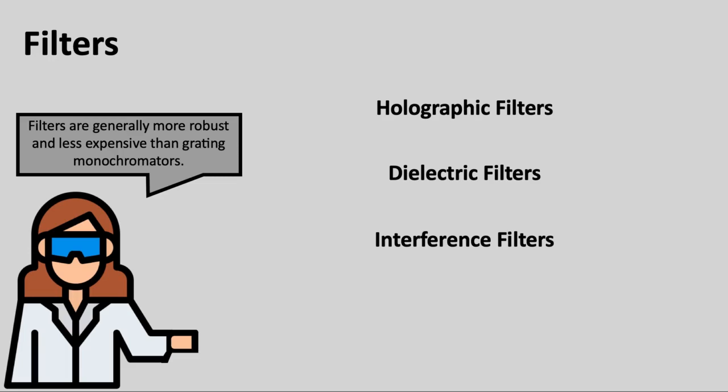But in all cases, filters basically permit certain bands of wavelengths to pass through them while either absorbing or reflecting other wavelengths. Filters are, in general, more robust and less expensive than grating monochromators, but they often have lower resolution when compared to monochromators, so there's a definite trade-off.